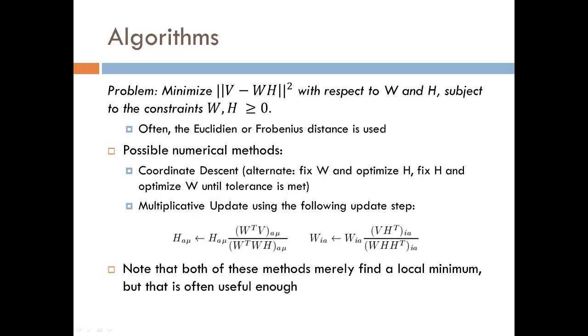Since W and H can both vary, there are two popular approaches for solving this problem numerically. The first is coordinate descent, whereby first we fix W and optimize H with gradient descent. Then we fix H and optimize W with gradient descent. This process is repeated until a tolerance is met.